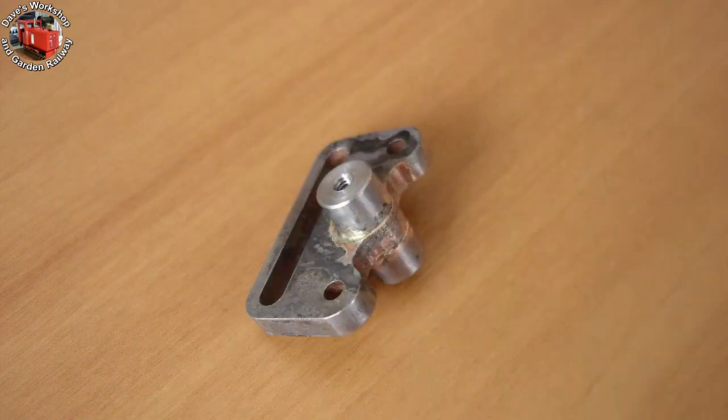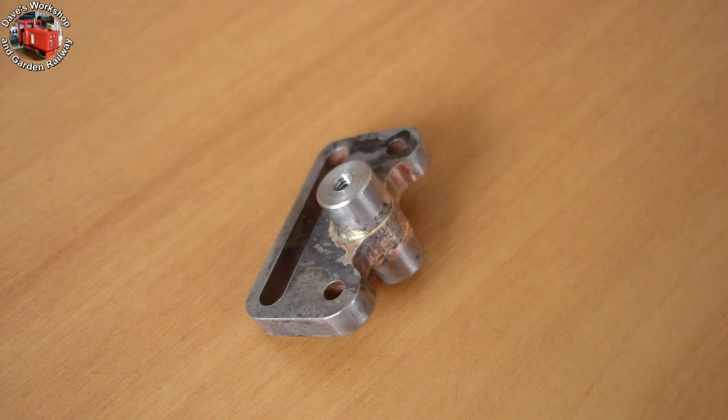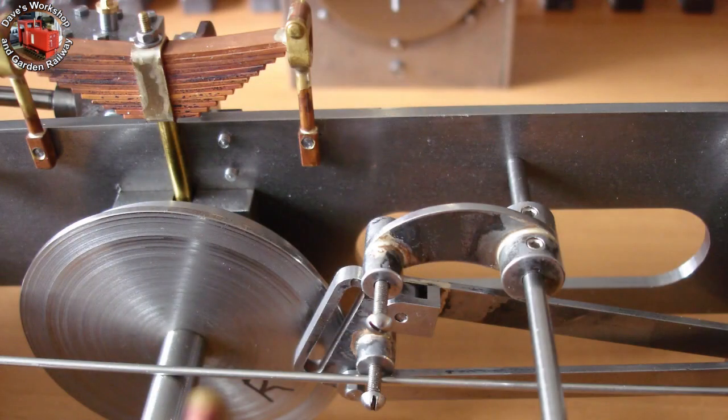I needed to braze 1 quarter inch bosses on the expansion link for the lifting arm to engage with. These are tapped 8BA. In position with screws in so that I could measure the expansion link hanger centers dimension. I added 40 thou and it came out at 0.721 inch.